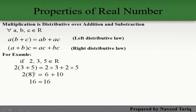Subtraction میں بھی یہی Distributive Property کام کرتی ہے۔ Addition کی جگہ minus لگا دیں تو یہاں بھی minus آجائے گا — یعنی multiplication is distributed over subtraction بھی ہوتی ہے۔